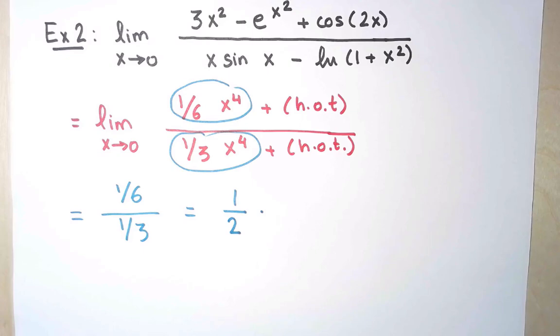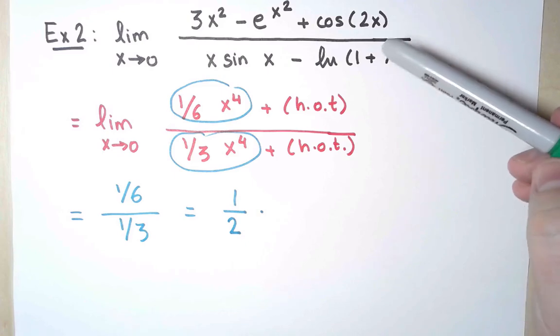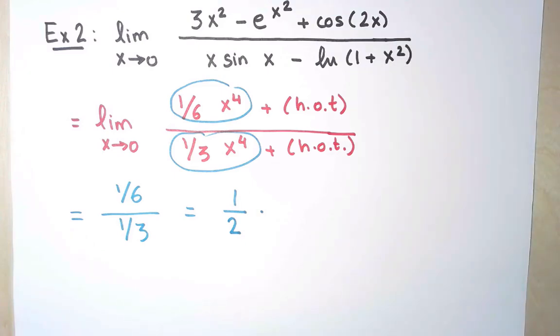And it may seem that the calculation I did was long and complex, but it wasn't really. Once you've done a few of these, it will be much faster. And in particular, this is much faster than trying to apply L'Hôpital's rule four times, because I have a 4 in here, to this expression. Try it if you want, and you will see that the calculations get messier.